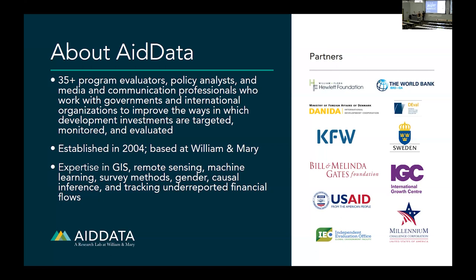Donor countries fall into two broad categories. Category one: traditional donor countries, such as the United States and Germany — long-time Development Assistance Committee members of the OECD. These countries report consistently to OECD standards, giving good transparency on how much money is spent and where. Category two: non-traditional donors such as Saudi Arabia and China. They are not DAC members and do not have to report to the OECD, creating an information gap that our research team steps in to fill.